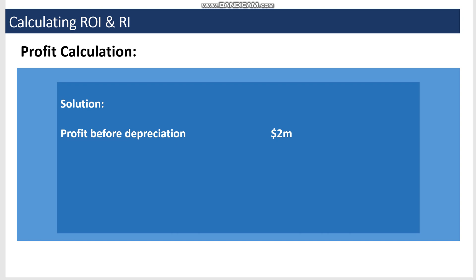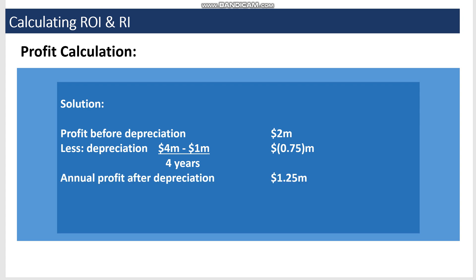Profit before depreciation is the net cash flow of 2 million dollars. We subtract the annual depreciation, calculated using the straight-line method as: cost minus residual value, divided by useful life. This gives us the annual profit after depreciation, which we consider as the controllable profit.